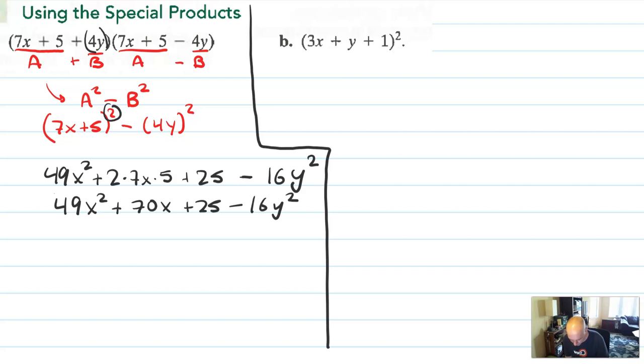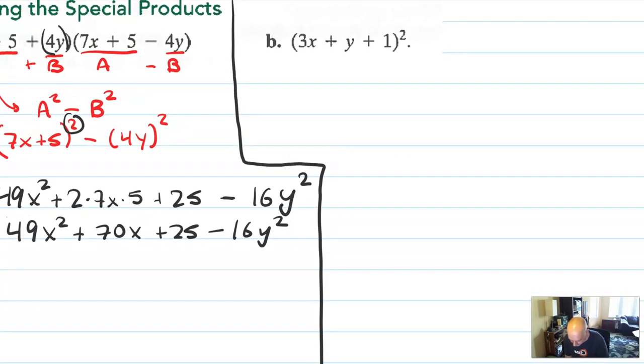3x plus y plus 1 quantity squared. And again, you could turn this into a boom, boom, boom, big box and do everything together. But I want to isolate two special terms. I see a 3x. I also see a y plus 1. I say, huh, x's and y's are weird together. What if I separate them and call 3x my a and y plus 1 my b?